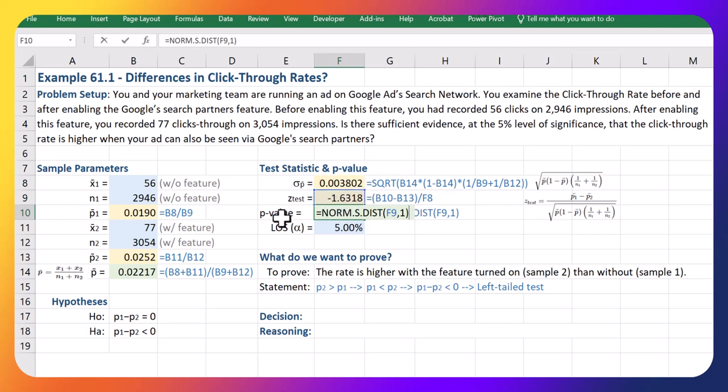That gives us a p-value of 5.14 percent. Oh man, that's really close to our cutoff at five percent. So what does that mean? Do we accept or reject H naught?